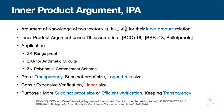Before introducing our contribution, I will briefly mention Inner Product Argument. Inner Product Argument is an argument of knowledge of two vectors A and B for their inner product relation. This killer log-based Inner Product Argument is proposed by Bootle et al. and optimized by Bünz et al., known as Bulletproofs.